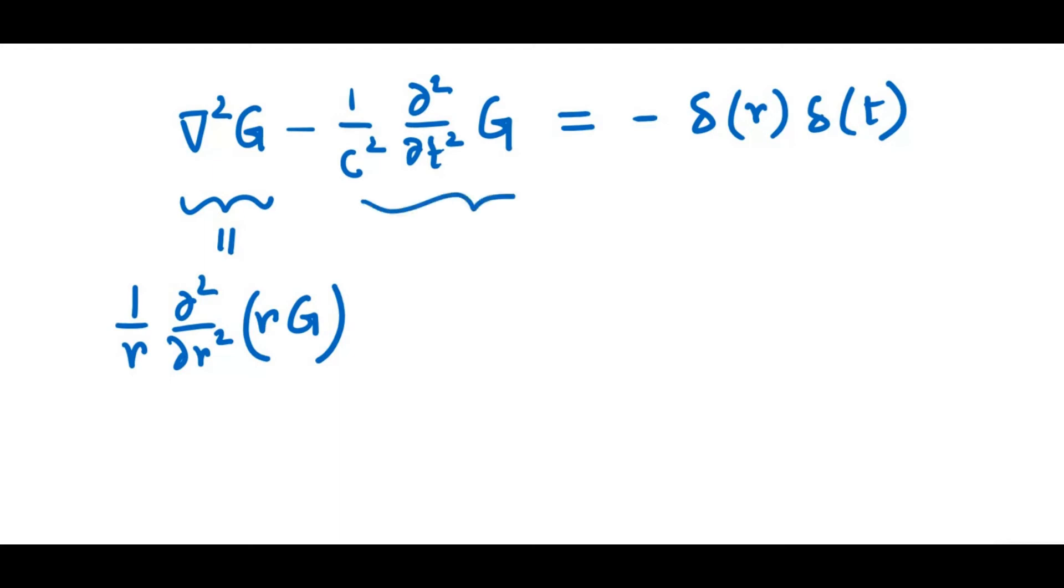So therefore, I can write this as 1 over C squared. 1 over R, and then to compensate 1 over R, I can multiply this G with R, and since they're independent of each other, R can move right through this differential operator without changing anything.